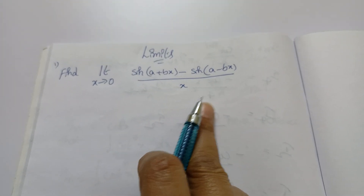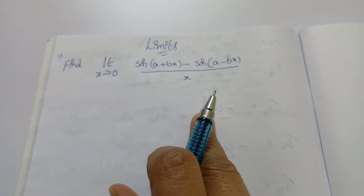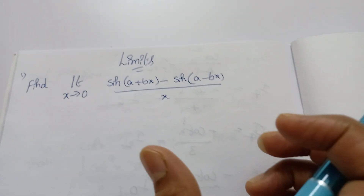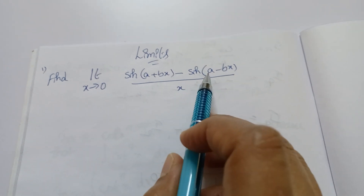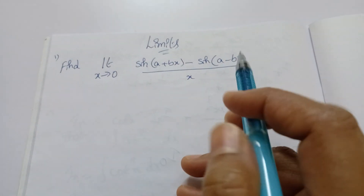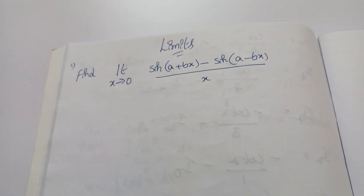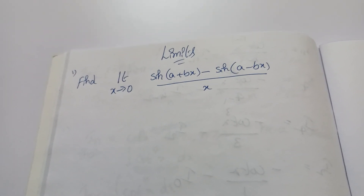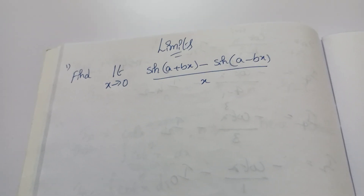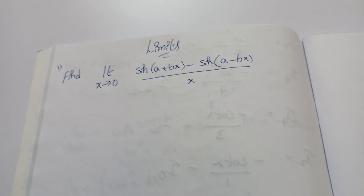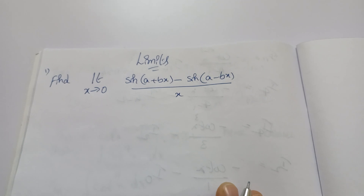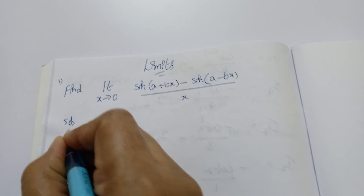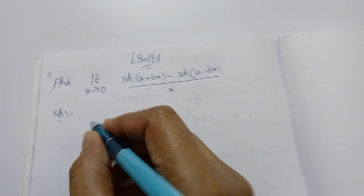The first problem is: limit x tends to 0 of [sin(a + bx) − sin(a − bx)] / x. Observe this problem. This looks like sin C − sin D. Remember trigonometry — trigonometry is compulsory at this level. Now let's go to the solution. Limit extends to zero.